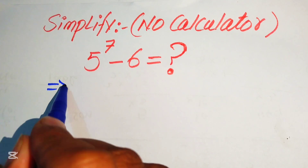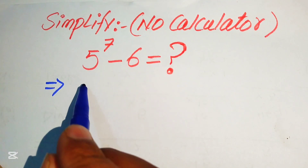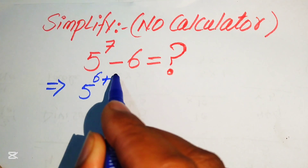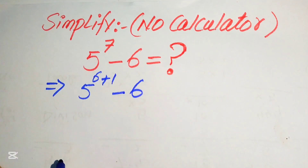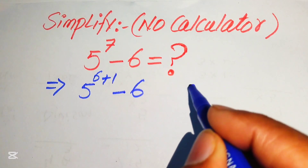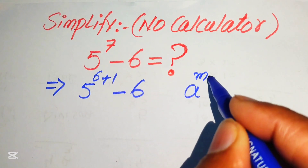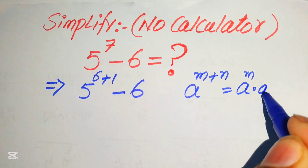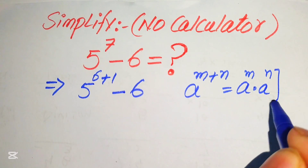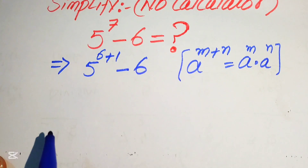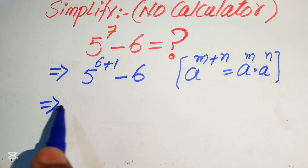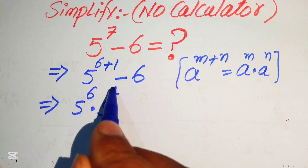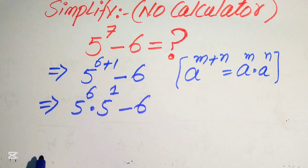The very first step is to focus on the exponent of this term, which is 7. We break 7 and write it as 5 to the power of 6 plus 1, minus 6. Here we need an exponent law: a to the power of m plus n equals a to the power of m multiplied by a to the power of n. According to this law, we write it as 5 to the power of 6 multiplied by 5 to the power of 1, minus 6.